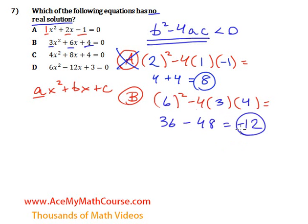So, that is negative. Equation b has a negative discriminant, so that is the answer. It will have no real solution.